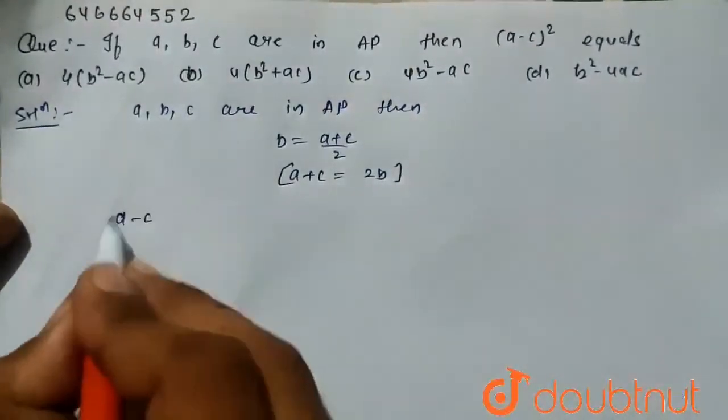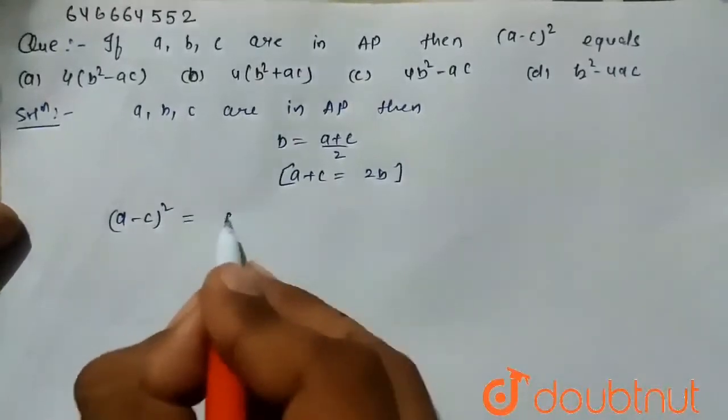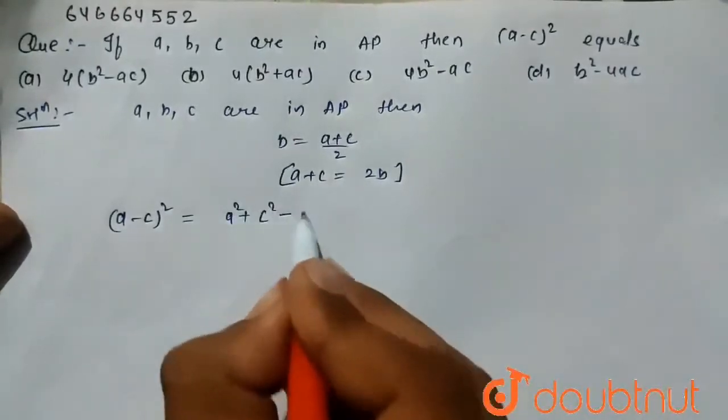So here the given value is a minus c whole square. So we can write it as a square plus c square minus 2ac.